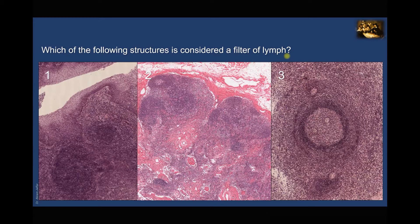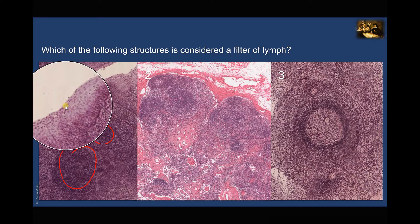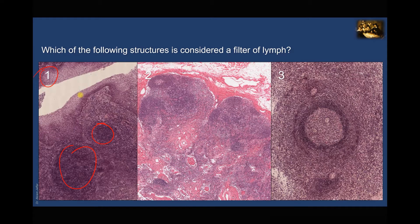Which of the following structures is considered a filter of lymph? The filter for the lymph is the lymph nodes. Looking at slide one, this is showing lymphatic follicles, but these lymphatic follicles are not covered by a capsule — they are covered by stratified squamous, non-keratinizing epithelium, which is very clear here. So this is not a lymph node, which should be covered by a fibrous capsule. Also on the same slide, you can see the presence of a crypt, which is not present in a lymph node. Crypts are more likely present in the palatine tonsil, and they are covered with the stratified squamous, non-keratinized epithelium of the pharynx and the palate.